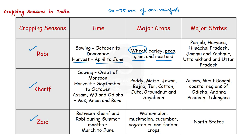Though rabi crops are grown in large parts of India, states from the north and northwestern parts such as Punjab, Haryana, Himachal Pradesh, Uttarakhand, Uttar Pradesh and the union territory of Jammu and Kashmir are important for wheat and other rabi crops. The availability of precipitation during winter months due to western temperate cyclones helps in the success of these crops, as seen in today's news as well.